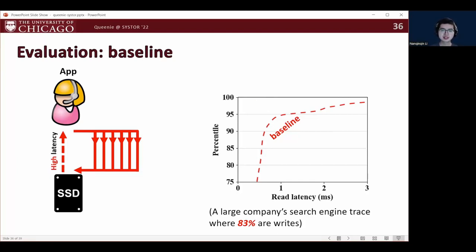Curves closer to the top left indicate better performance. As we can see, the baseline exhibits a long tail behavior. The 95th percentile is around 1.2 ms and the 99th percentile is around 3.4 ms.